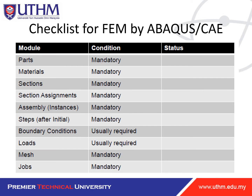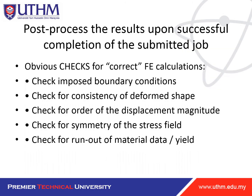The checklist for finite element modeling in Abaqus CAE: the mandatory parts are Part, Materials, Sections, Section Assignments, Assembly, and Steps. Boundary conditions are usually required. These are followed by Load, Mesh, and Jobs. I will show examples of all of these in the cube simulation.